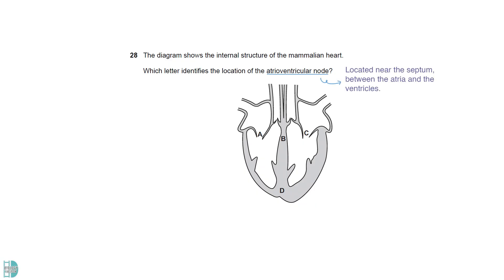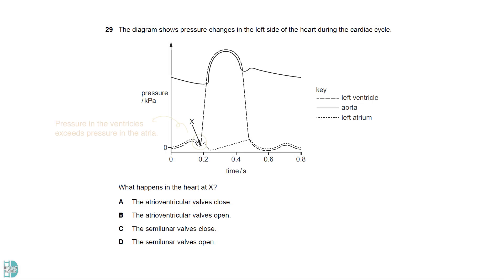The atrioventricular node is located near the septum, between the atria and the ventricles. So, the answer is B. X is the point where the pressure in the ventricles becomes higher than the pressure in the atria. This may cause a backflow of blood from the ventricles to the atria. So, the atrioventricular valves close to prevent this.